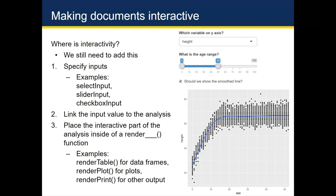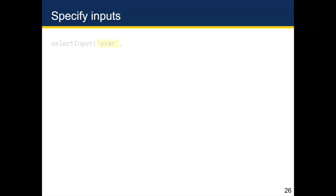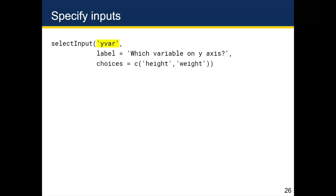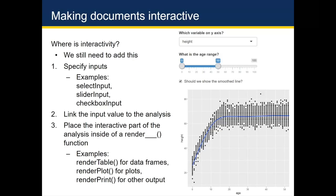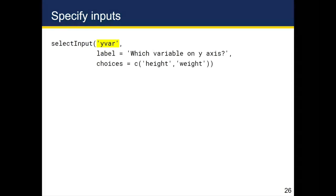The first input we're going to look at is the select menu, which has 'height' selected by default, but if you click on it you'd see height and then weight. Because that input controls what's on the y-axis, we'll name it 'yvar'. We use the selectInput function where the 'I' is capital. The first argument is the name of that variable in quotes, the second argument is the label shown to the user, and then we tell it what the choices should be — height and weight. By default, the first option is selected.